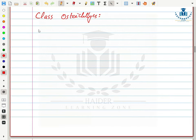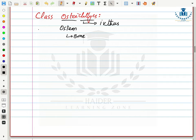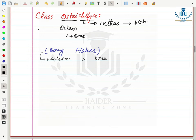The third class of Superclass Piscis is Class Osteichthyes. 'Osteon' means bone and 'ichthyes' means fish — so Class Osteichthyes includes bony fishes. They are called bony fishes because their skeleton is made up of bone. Bone is the hardest connective tissue and is less flexible than cartilage.